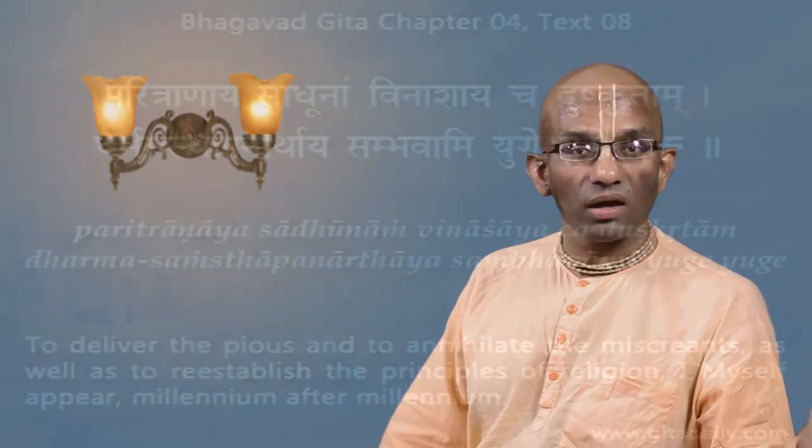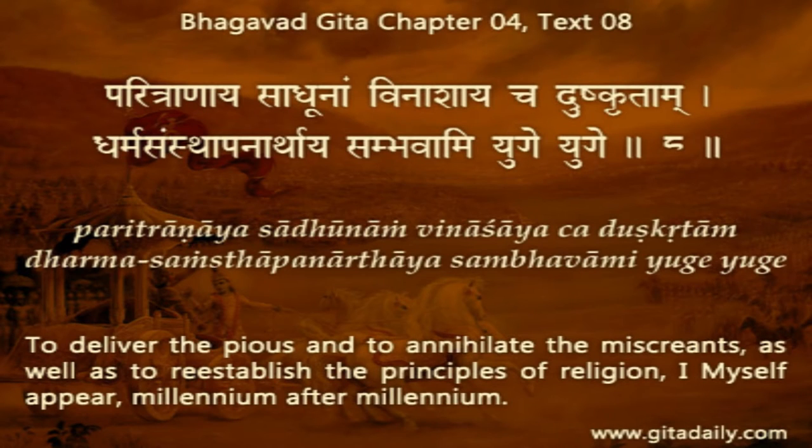where in the fourth chapter, Krishna states that Dharma samstha panarthaya, sambhavame yuge yuge. In 4.8, Krishna states that I come to this world to establish Dharma. So if Krishna has come to establish Dharma, then how can he tell Arjuna to reject all dharmas.